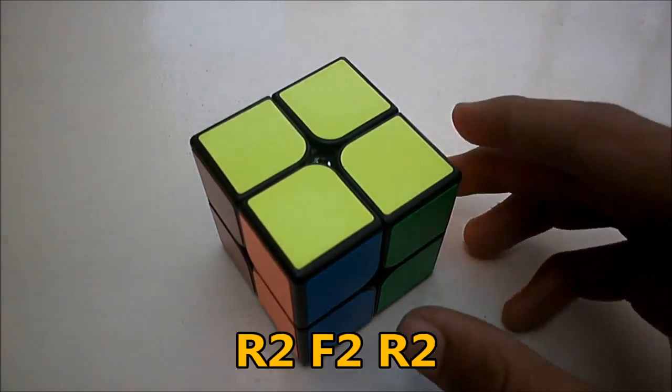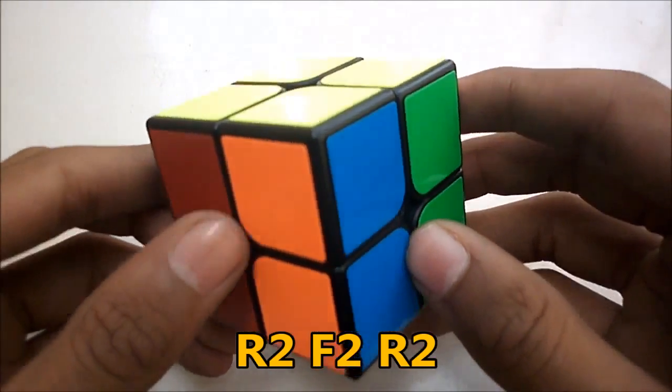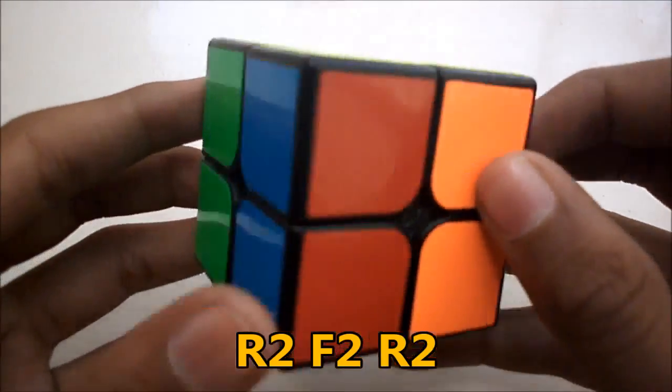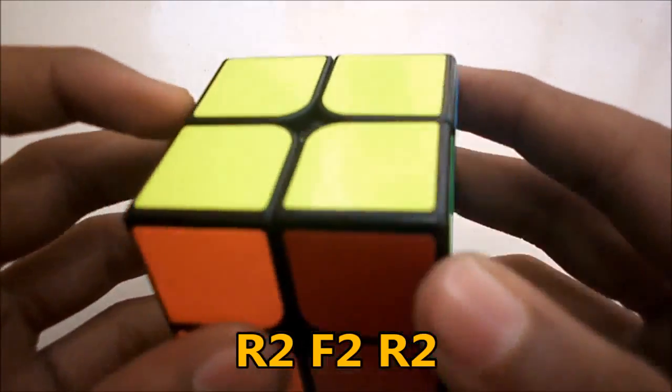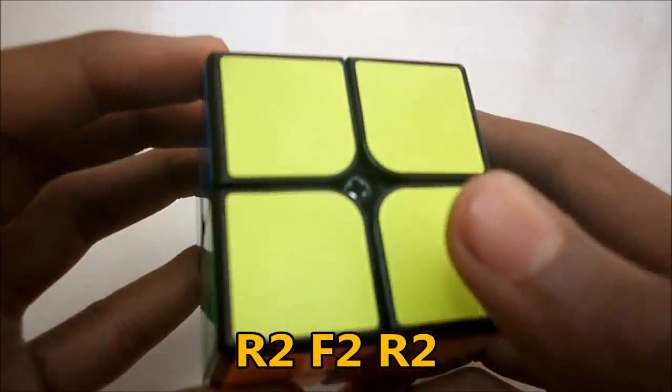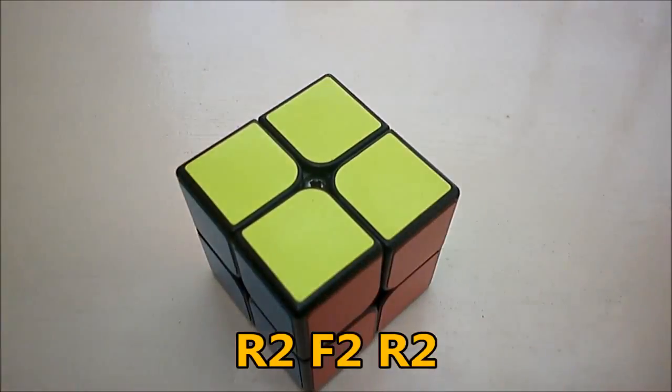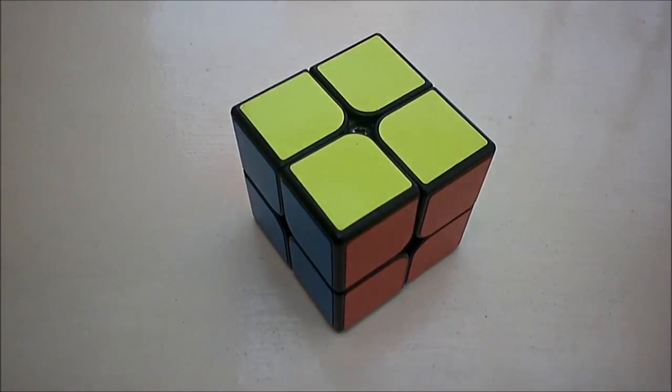So this last PBL case is by far the easiest one when you have a diagonal swap on the top as well as on the bottom. So you hold the cube from any angle and perform this algorithm: R2 F2 R2 and that's it, that solves the case.